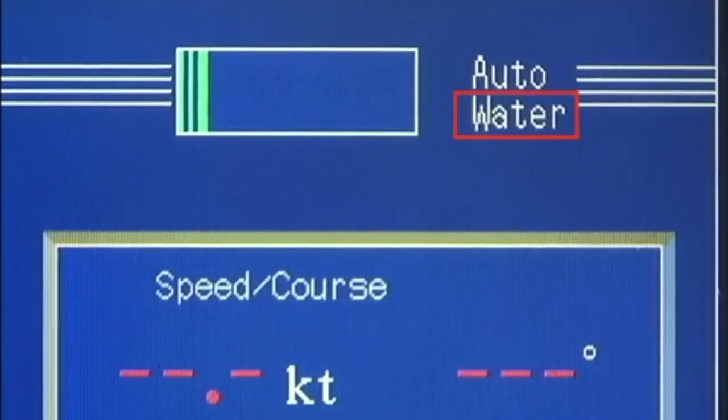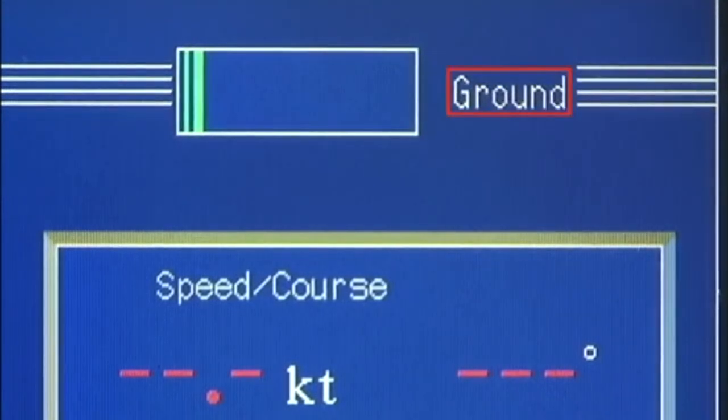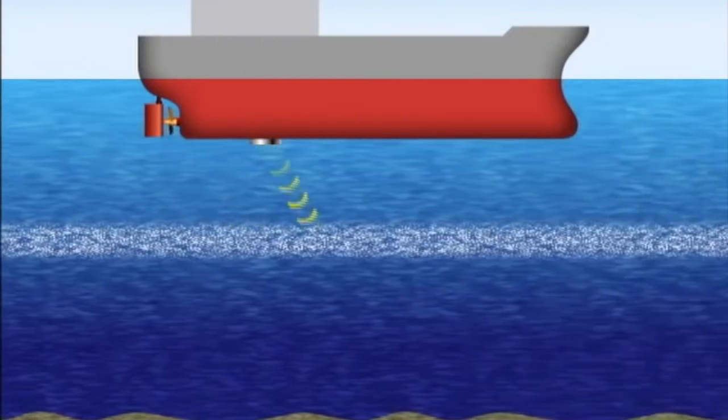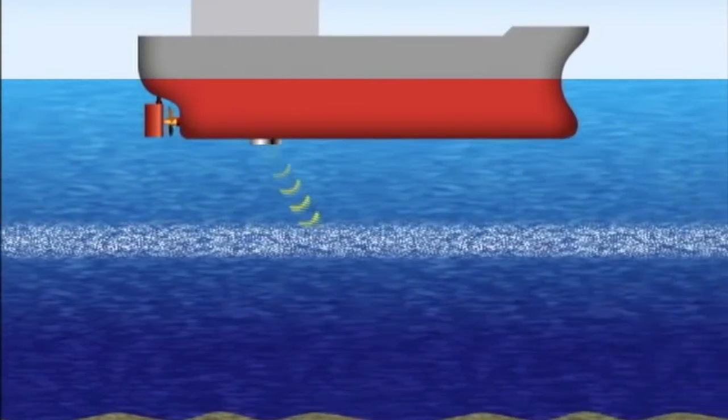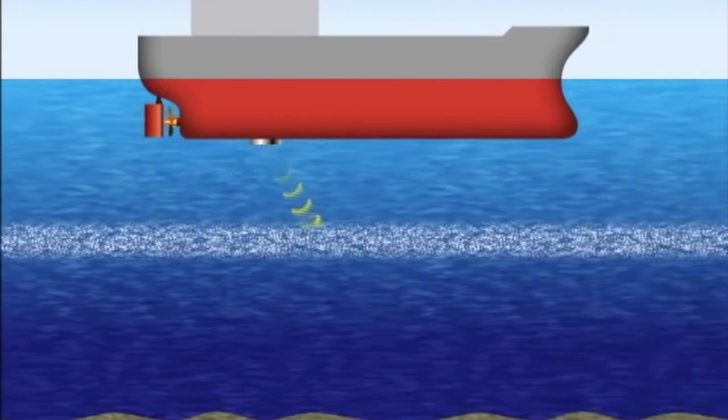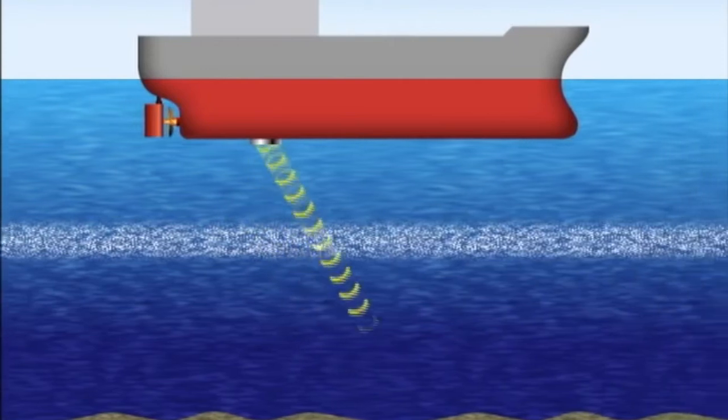The Doppler sonar speed log has two modes. One can measure speeds through the water and over the ground, the other through the water only. The EM log can only measure speeds through the water, but the Doppler sonar speed log has the ability to measure speeds both through the water and over the ground by switching between the two systems.